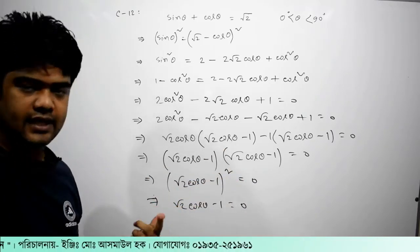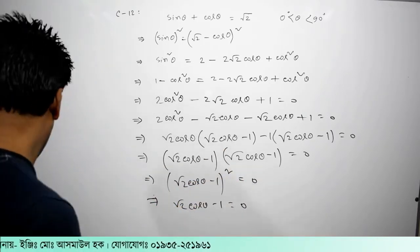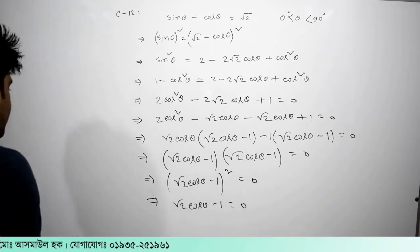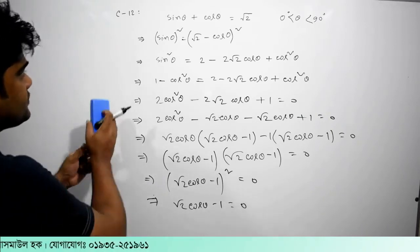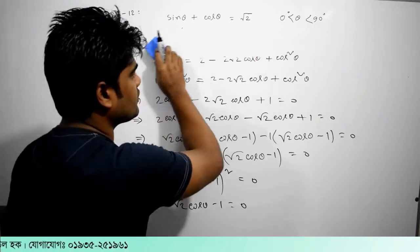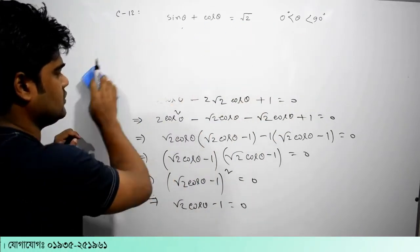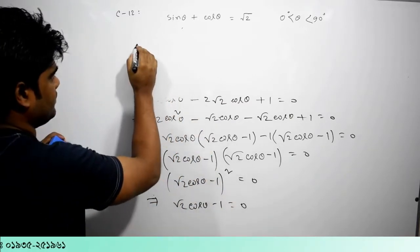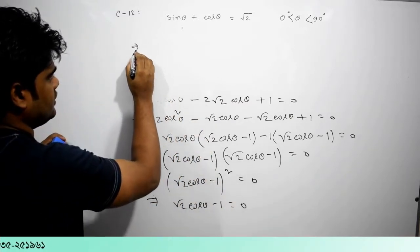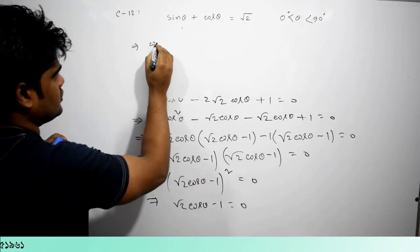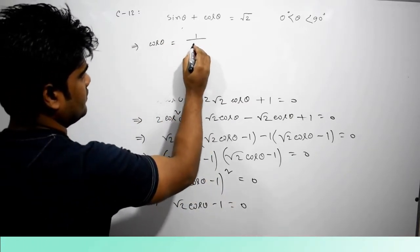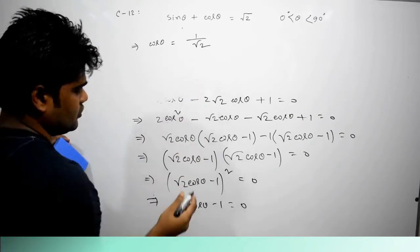What is the one that we have now? I am going to write this problem. Let me show you my math about it. Cos theta is equal to 1 by √2.